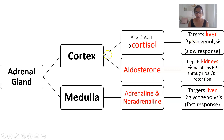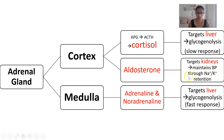The other function of the adrenal cortex is to secrete a hormone called aldosterone. Aldosterone targets the kidneys and helps to maintain blood pressure in the body by ensuring we retain salts — sodium and potassium. The more salt you have in your bloodstream, the higher your blood pressure is going to be, so the level of aldosterone is carefully controlled to maintain good blood pressure.